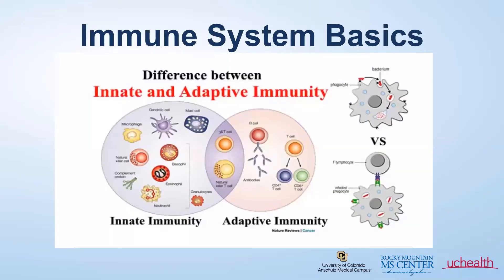Before we dive into what is autoimmune neurology, we need to review some basics of the immune system to understand how the interplay between the immune system and the nervous system can cause autoimmune disease. There are two main parts of the immune system, including the innate immune system and the adaptive immune system. The innate immune system is what you are born with and will fight off any foreign bug or infection right away, acting as the first defense.